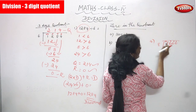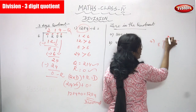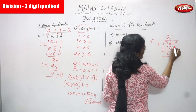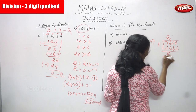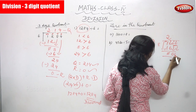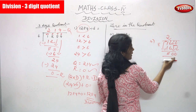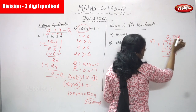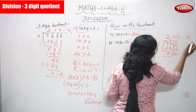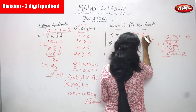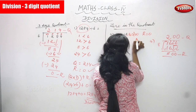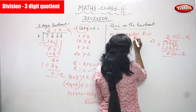In 16, 8 goes 2 times — 8 twos are 16. Write 2 in the quotient. 16 minus 16 equals zero; the remainder is zero. The next two digits are 0 and 0. Bring down the zeros, but you cannot divide, so write the two zeros in the quotient place. The quotient is 200 and the remainder is zero.